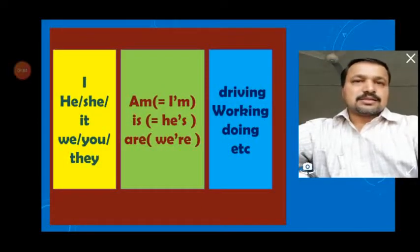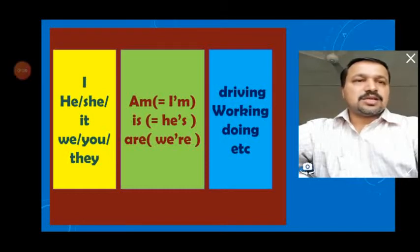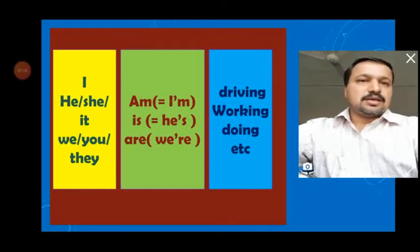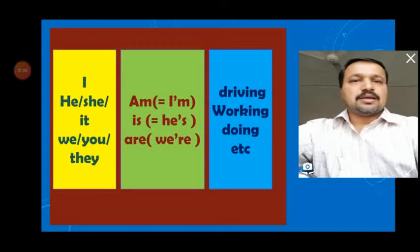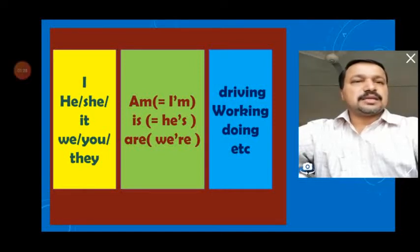Let's see the structure. With 'I' we use 'am': I am driving, I am working, I am doing, etc. If the subject is 'he,' 'she,' 'it,' or a singular subject, we use 'is': he is driving, she is driving, it is working. For 'we,' 'you,' and 'they,' we use 'are': we are doing, you are doing, they are driving.